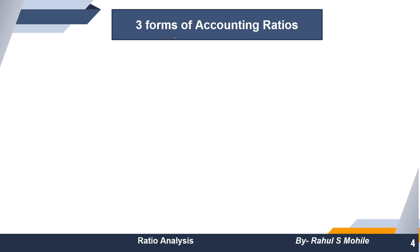The next chapter is ratio analysis, also called financial analysis — a very simple, interesting, and important topic from the exam point of view. It has significant practical importance and you will find many MCQs from this topic in the paper. There are three forms of accounting ratios the examiner can ask about, so pay close attention.